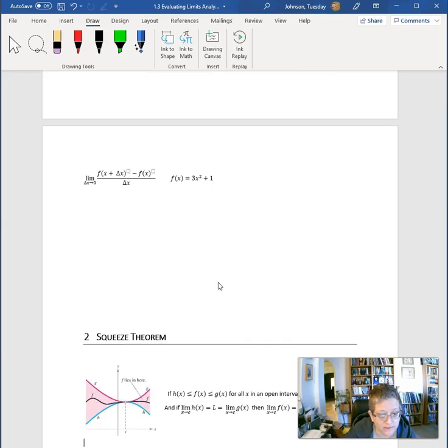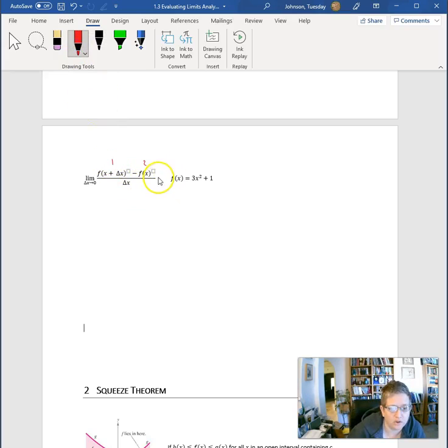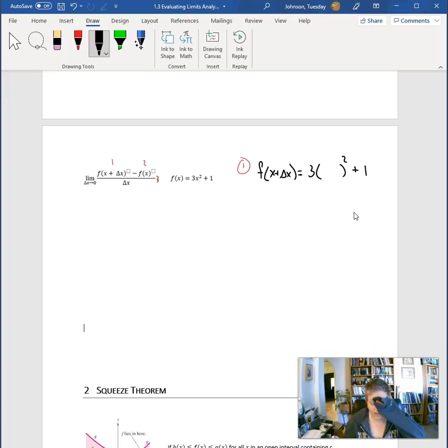Now we want to do the same thing, but this time we have to input a function. I'm going to take this in pieces. Piece one, piece two, and then the whole fraction is piece three. So the first thing I want to do is find f of x plus delta x. I know that the form of f of x is 3 times something squared plus 1. I call this the skeleton. The skeleton lays the outline for what the structure of the function is.